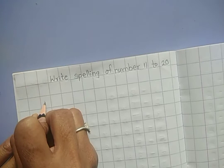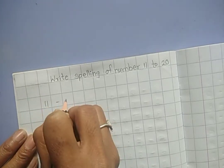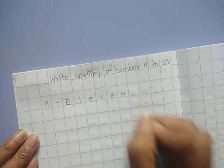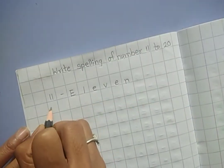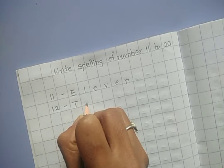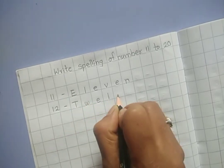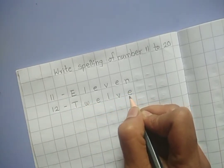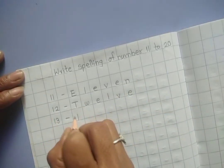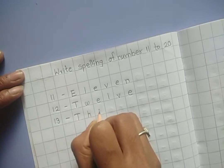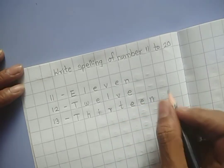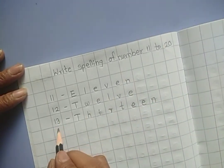Number 11, E-L-E-V-E-N, eleven. 12 dash T-W-E-L-V-E, twelve. 13, T-H-I-R-T-E-E-N, thirteen. Students, you have to write it very properly, okay?